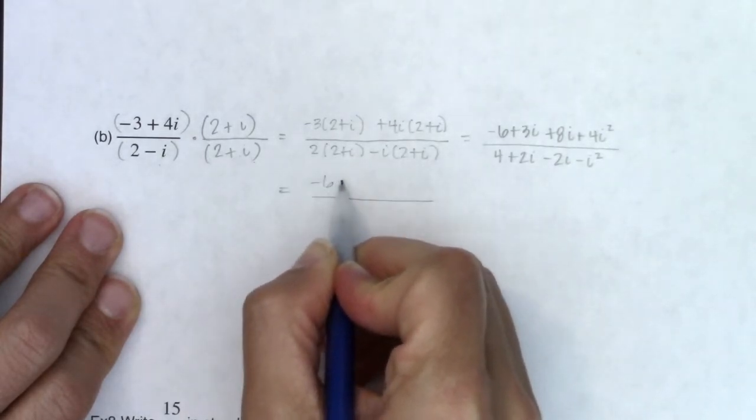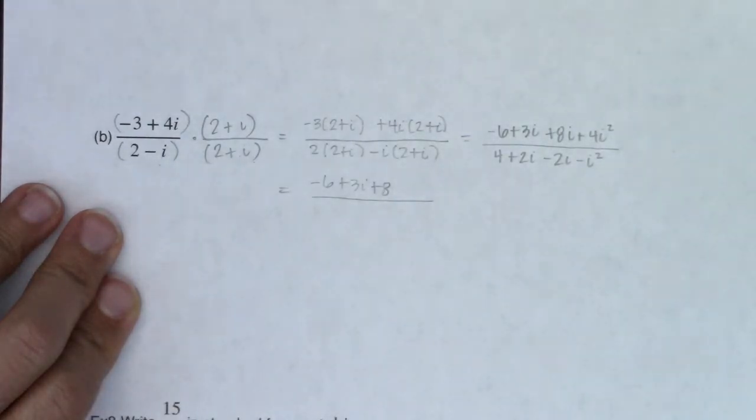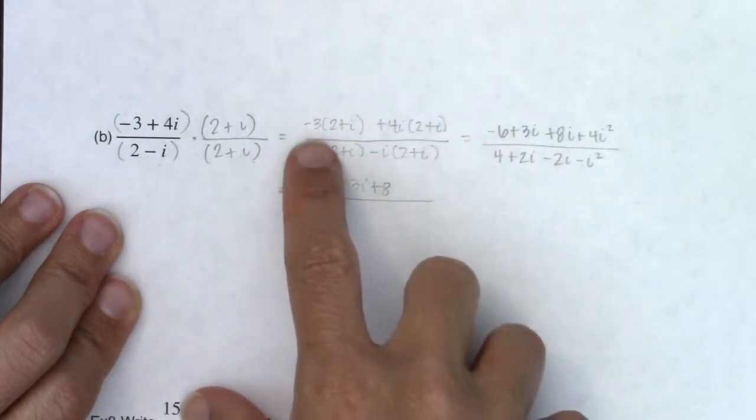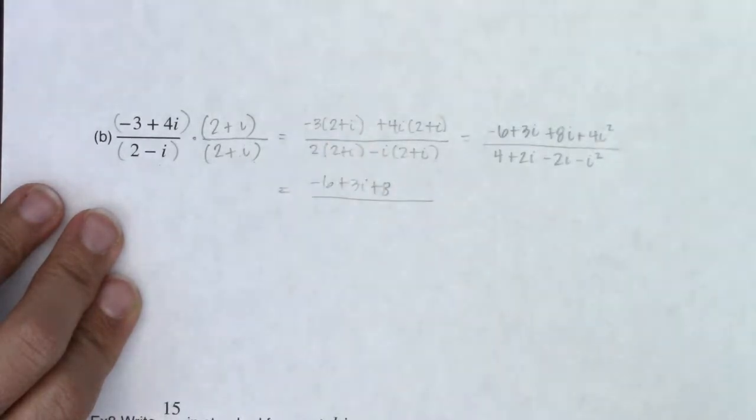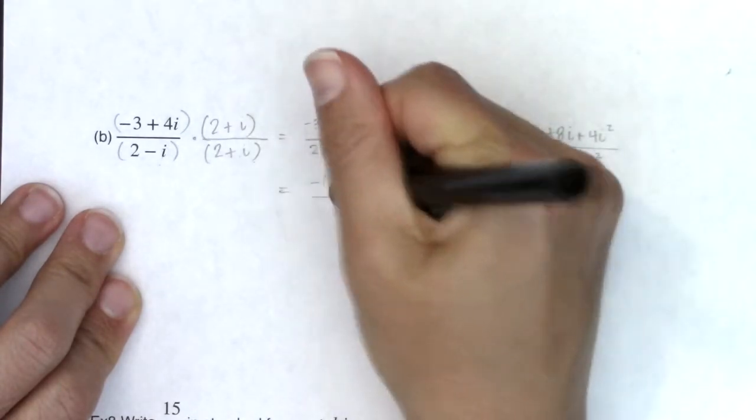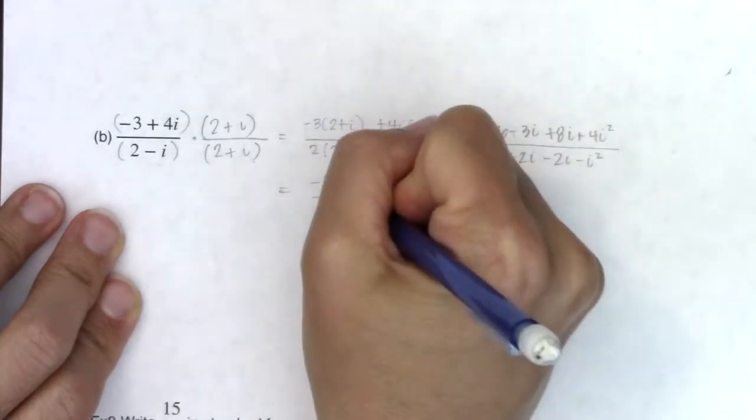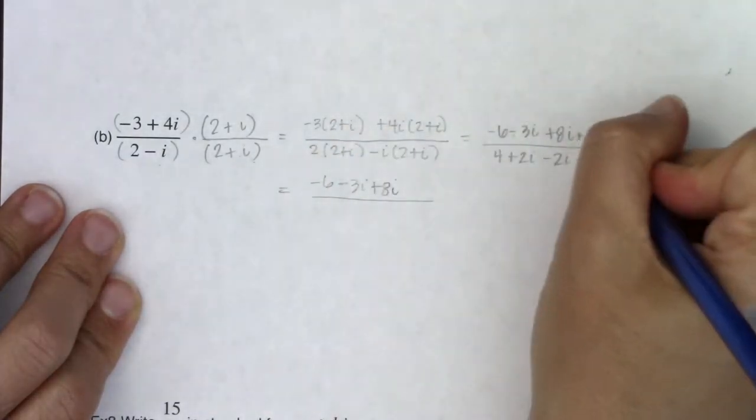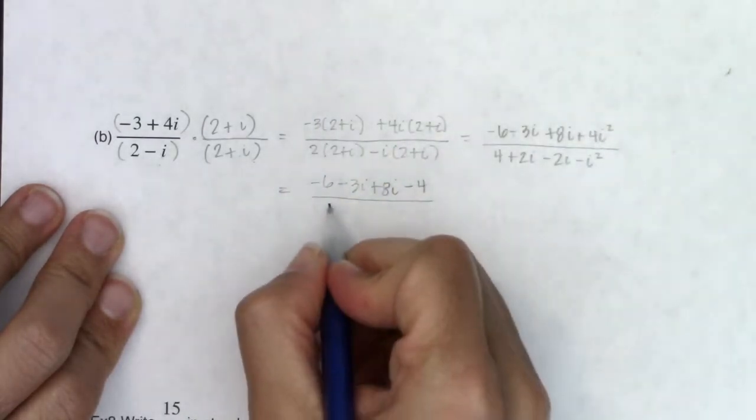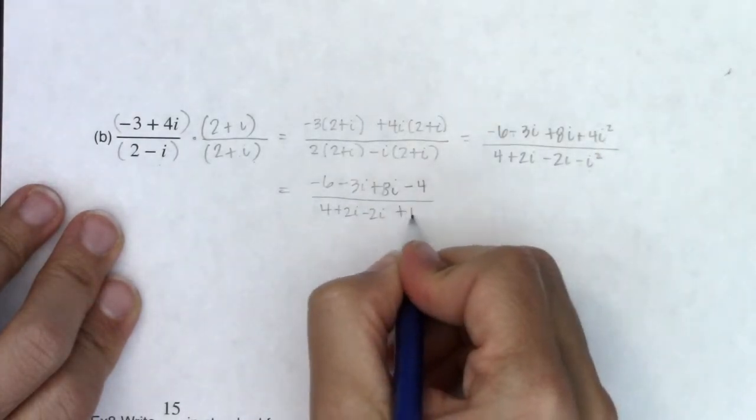So I've got negative 6 plus 3i plus 8i. Actually, if I look at this, I believe I made a typo because we have negative 3 times positive 2 is negative 6, and I forgot to distribute the negative. Negative 3 times positive i. Hold up, let me switch that. So I found my typo. That's great. It looks like plus 8i. Positive 4 times negative 1 will be negative 4. And then here we will have 4 plus 2i minus 2i. If I subtract a negative 1, that is positive 1.